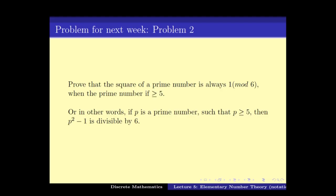The second problem: if p is a prime number, prove that the square of the prime is always congruent to 1 mod 6 when the prime is greater than or equal to 5. In other words, if p is a prime number greater than or equal to 5, then p² minus 1 is divisible by 6. The first problem says that the square of any integer minus 1 cannot be divisible by 4, and the second says that for any prime greater than or equal to 5, the square of the prime minus 1 is divisible by 6.